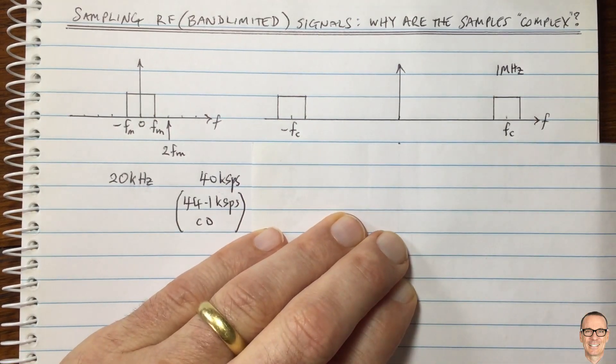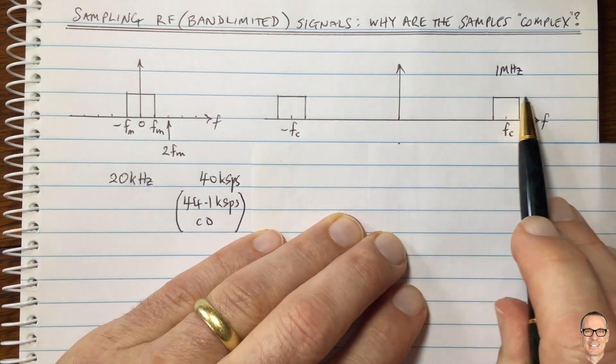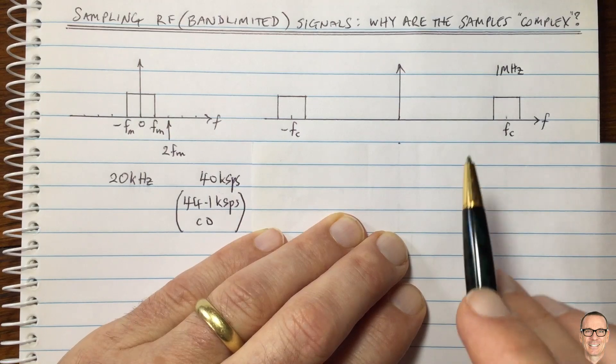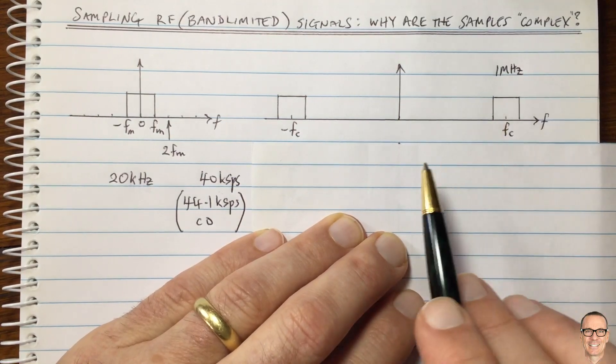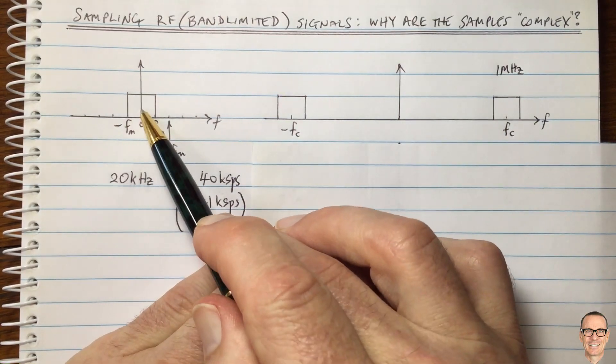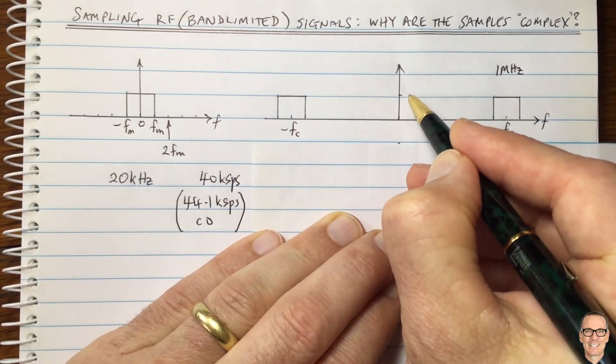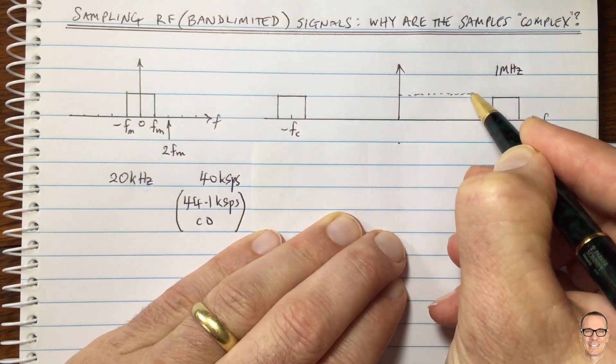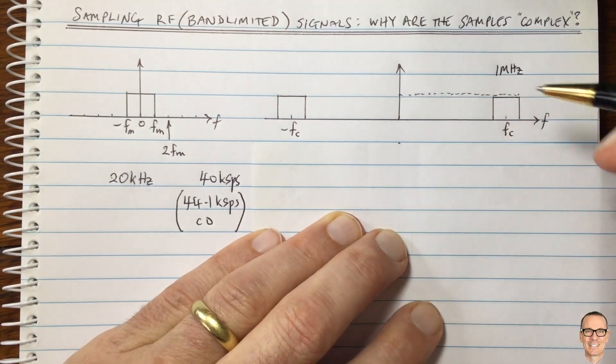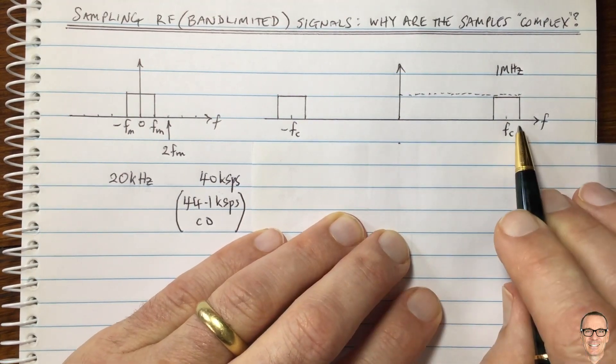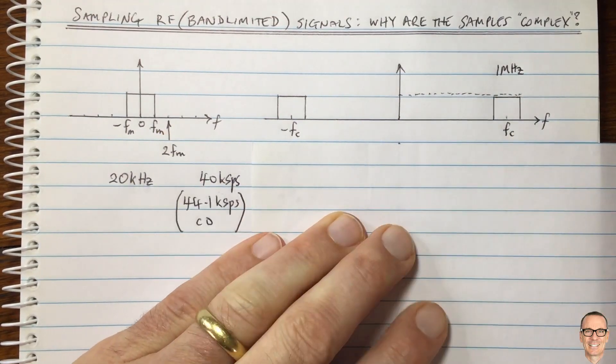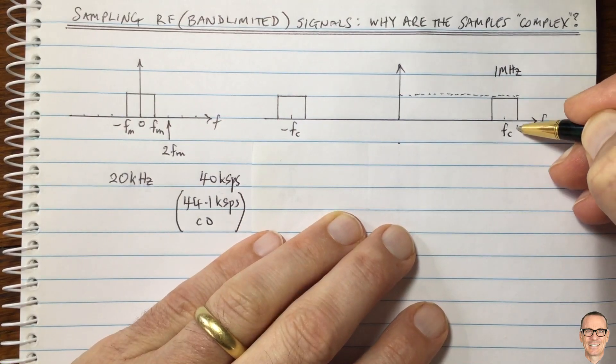So what we could do is we could think about this when it gets to the receiver. We could think about this as a signal just like this, where we had an effective channel that reaches all the way up to 1 megahertz plus the 20 kilohertz. So this value here is, we'll call that F capital M.